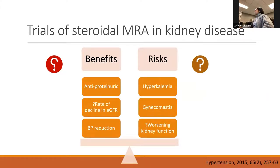How does this translate to humans? Unfortunately, we haven't had large clinical trials looking at kidney outcomes with steroidal MRAs, unlike with non-steroidal MRAs. From the limited data on steroidal MRAs in kidney disease, we know they have antiproteinuric effects. There may be a signal toward rate of GFR decline, but whether that's clinically meaningful is unknown. In individuals with mild CKD and resistant hypertension, they do have blood pressure-lowering effects. These benefits must be weighed against the risks of hyperkalemia, gynecomastia, and possibly worsening kidney function.